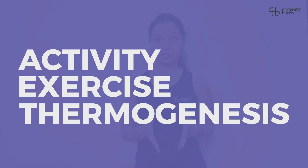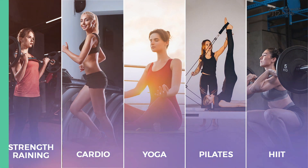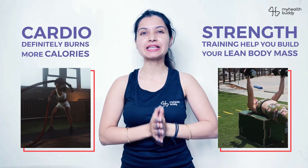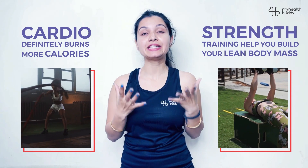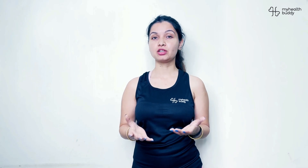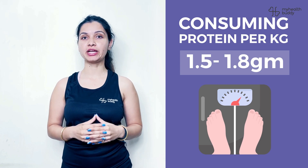The more protein you eat, the more calories would be required to digest it. Next comes exercise activity thermogenesis. As the name suggests, it is the amount of energy consumed while doing any sort of exercise — may it be yoga, strength training, cardio, pilates, HIIT, etc. Cardio definitely helps in burning more calories, but strength training will help you build lean body mass over time, provided you have a good amount of protein in your diet. In general, a person should consume around 1.5-1.8 grams of protein per kg of body weight, along with 3-4 sessions of strength training in a week.